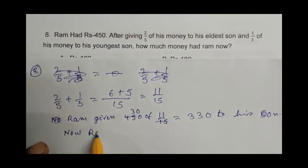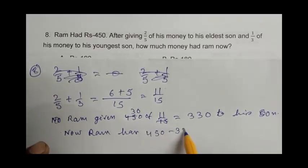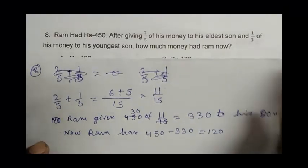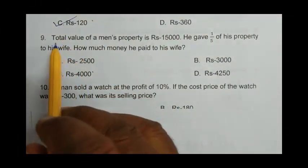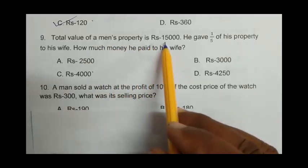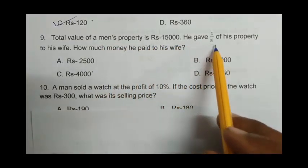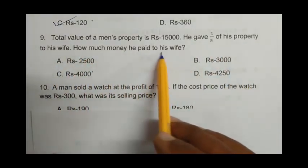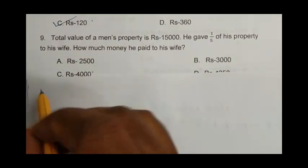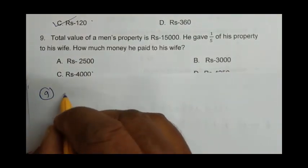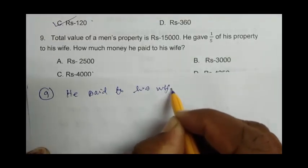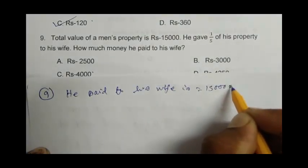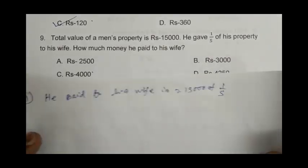Question number 9: Total value of a man's property is Rs. 15,000. He gave one-fifth of his property to his wife. How much money he paid to his wife? He paid 15,000 × 1/5, that is 3,000. So B is the right answer.